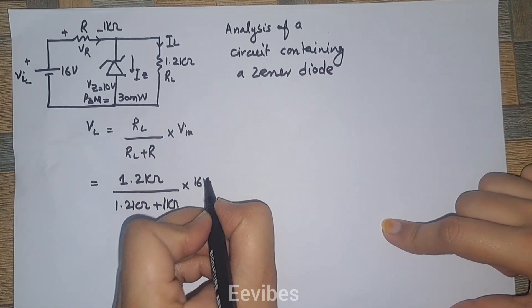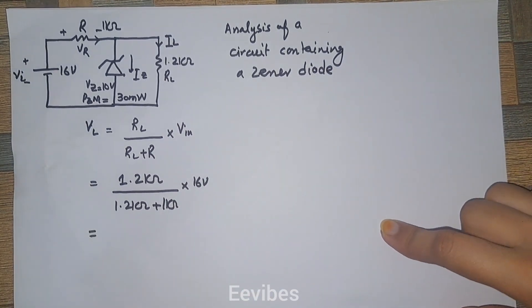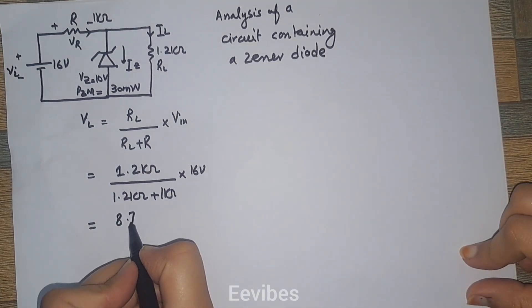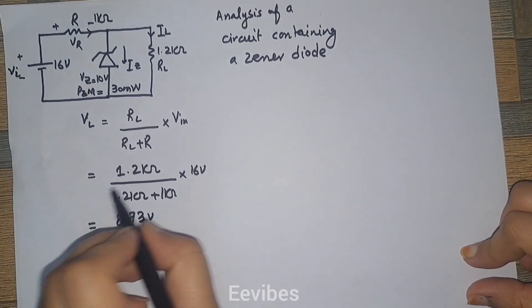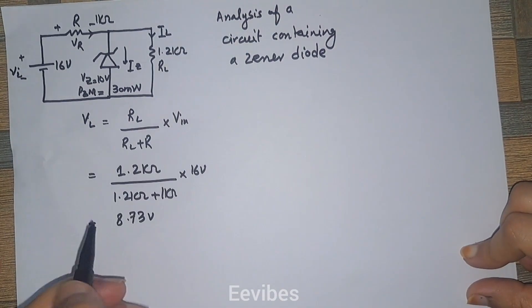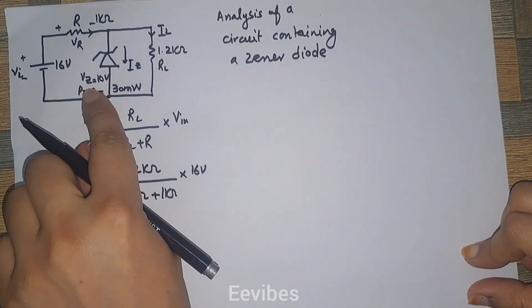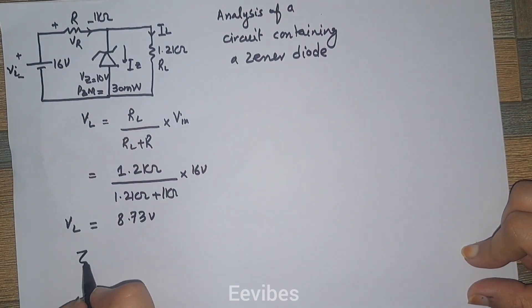Let's simplify it and you will see it equals 8.73 volts. So 8.73 volts are present across this load resistor, which is VL. Now, since the zener has been rated for VZ which equals 10 volts.